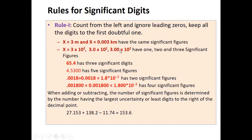For 5.4, there are two significant figures — five and four. For 45300, that is four, five, three and two zeros, giving five significant figures. Numbers like 0.0018 have ignorable leading zeros, so only one and eight are important — two significant figures. 1.8 × 10⁻³ is the same — two significant figures. For 1800, we have four significant figures if we count one, eight, zero, zero and ignore the trailing zeros only as appropriate.